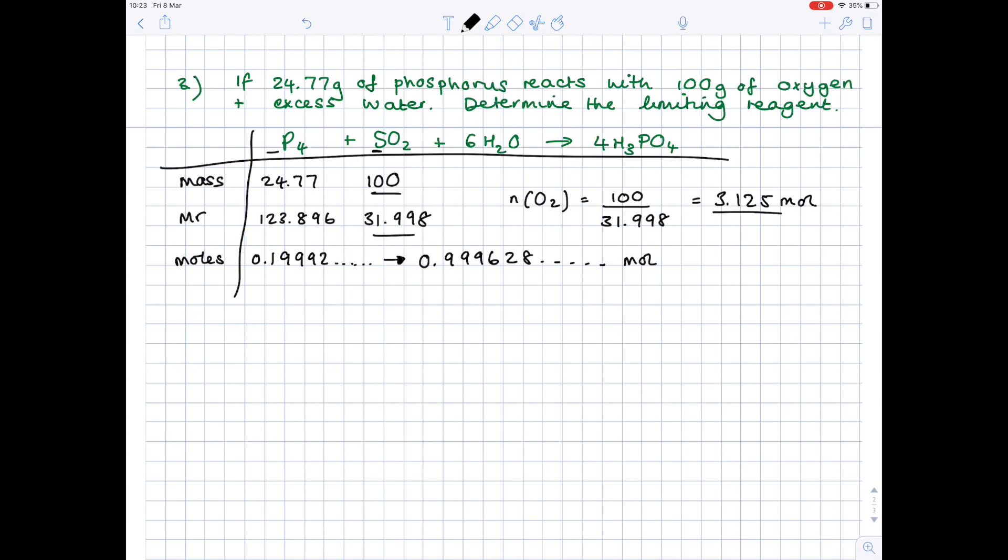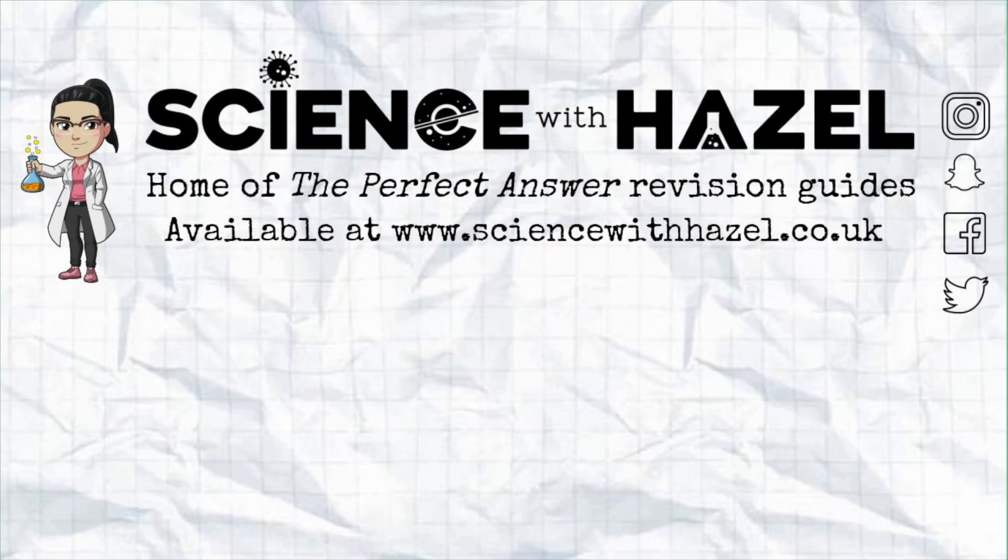At this point, you need to compare the two mole numbers. In terms of the amount of oxygen you've been given, there's loads of it, there's 3.125 moles. In terms of the amount you need to react fully with the phosphorus, you only need 0.999628. So clearly we've supplied way more oxygen compared with phosphorus, so when we determine the limiting reagent, clearly it will be phosphorus.